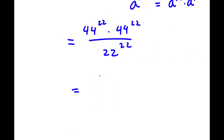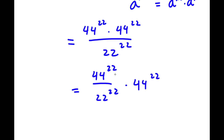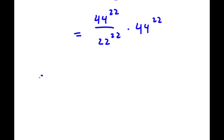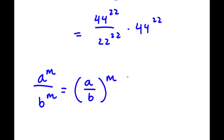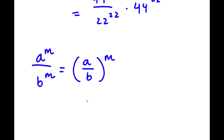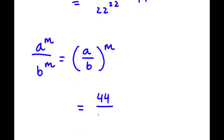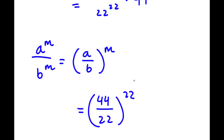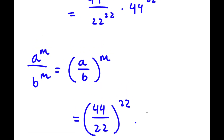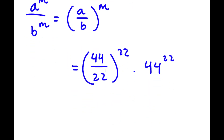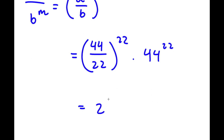Now this is the same as 44 to the power of 22 over 22 to the power of 22, times 44 to the power of 22. If I have a to the power of m over b to the power of m, this equals a over b to the power of m. So 44 to the power of 22 over 22 to the power of 22 equals 44 over 22 to the power of 22. And now I have this times 44 to the power of 22. Since 44 over 22 equals 2, I now have 2 to the power of 22 times 44 to the power of 22.